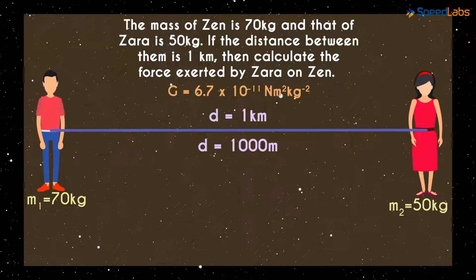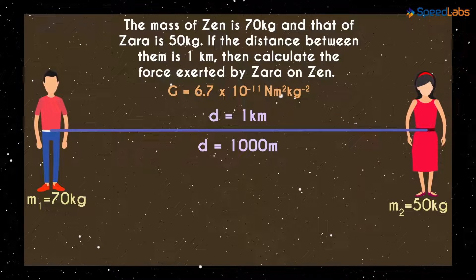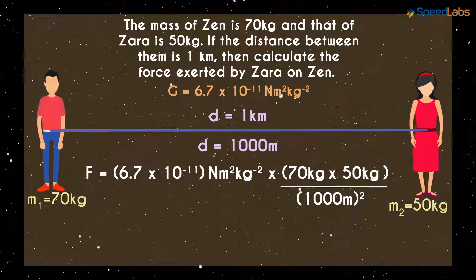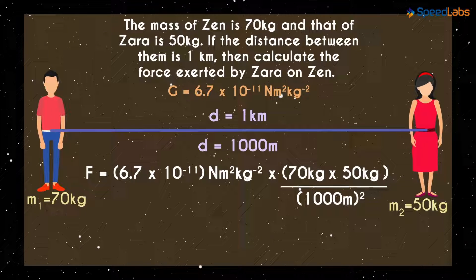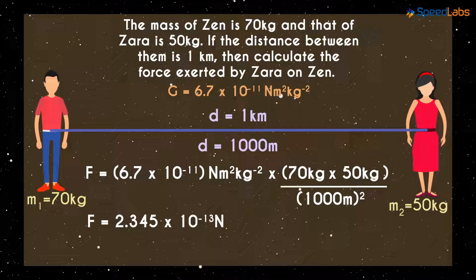We are ready to substitute these values in the formula now. Substituting the values in the formula, we get this. And solving this will give us the value of F as 2.345 times 10 raised to negative 13 N.